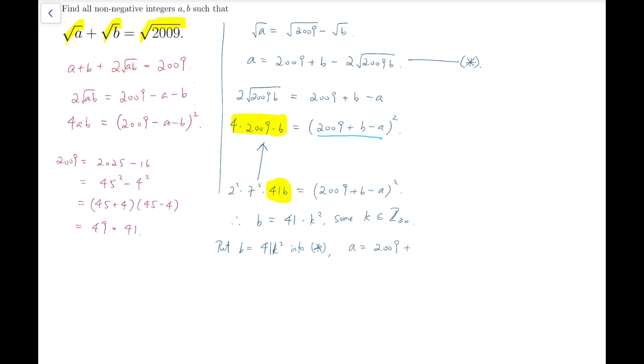Then a equals 2009 plus 41k² minus 2 times square root of 2² times 7² times 41 times 41k². And the things inside the square root are all perfect squares, so it simplifies very quickly.